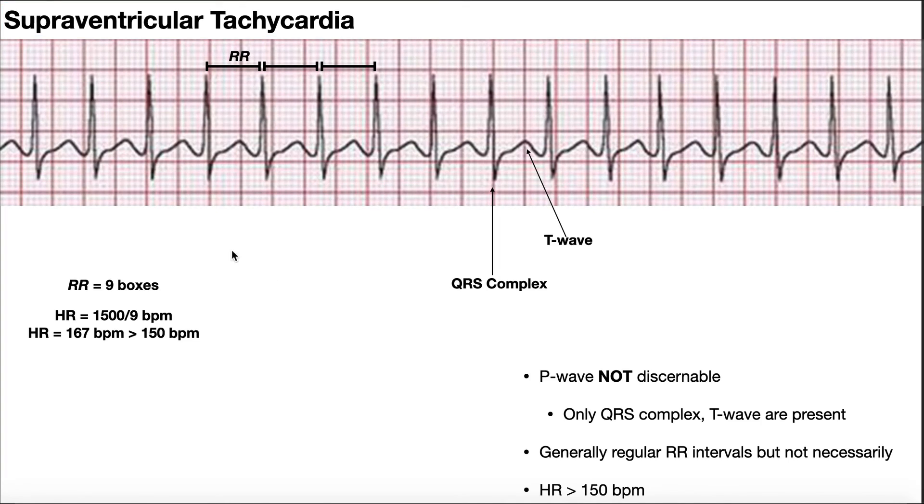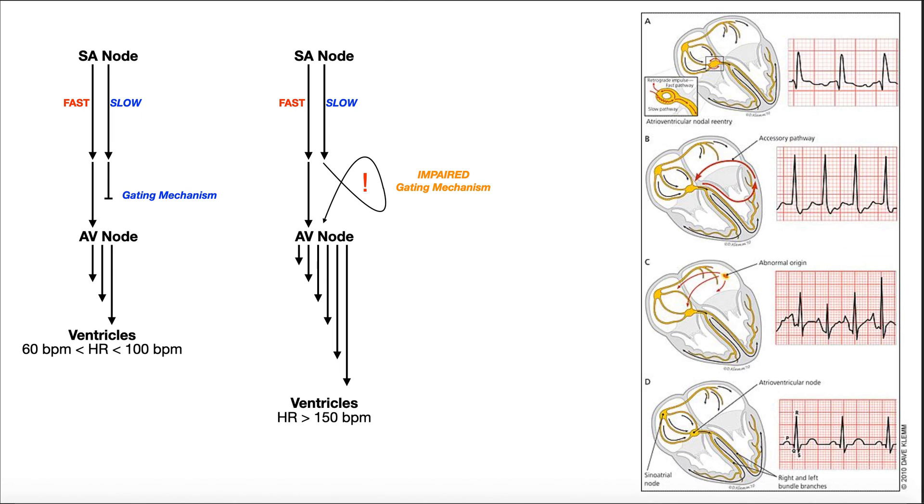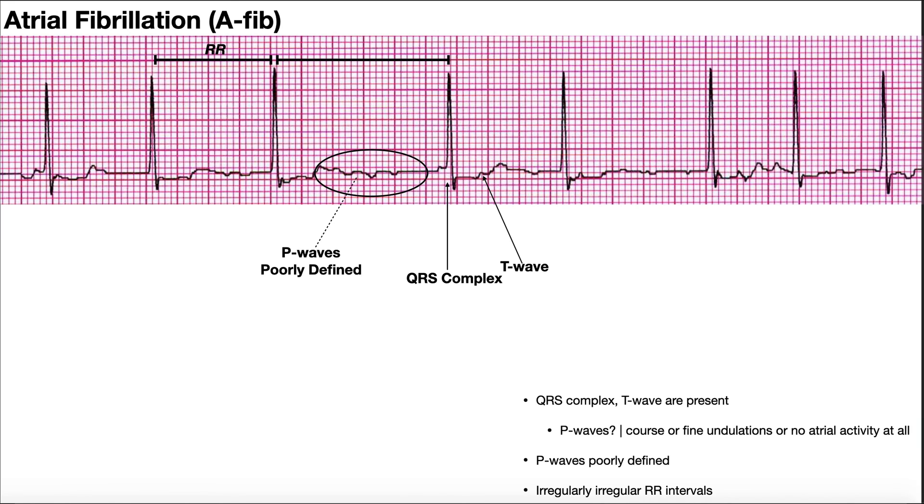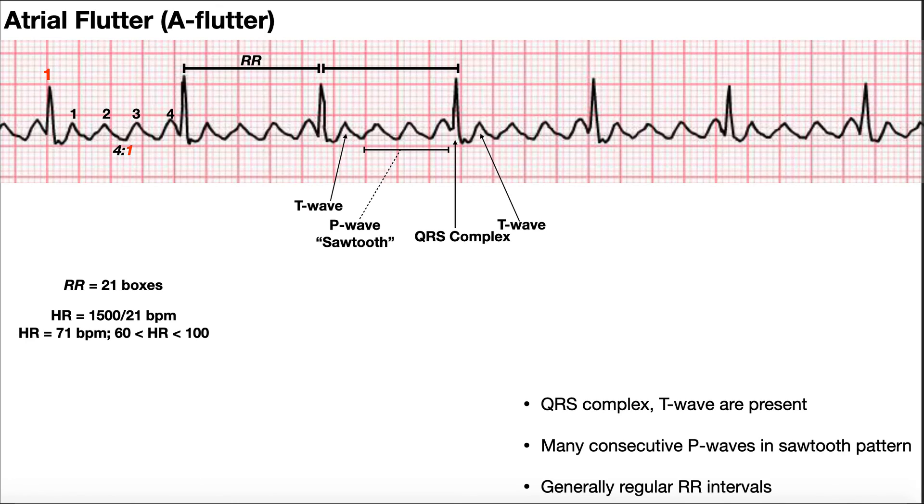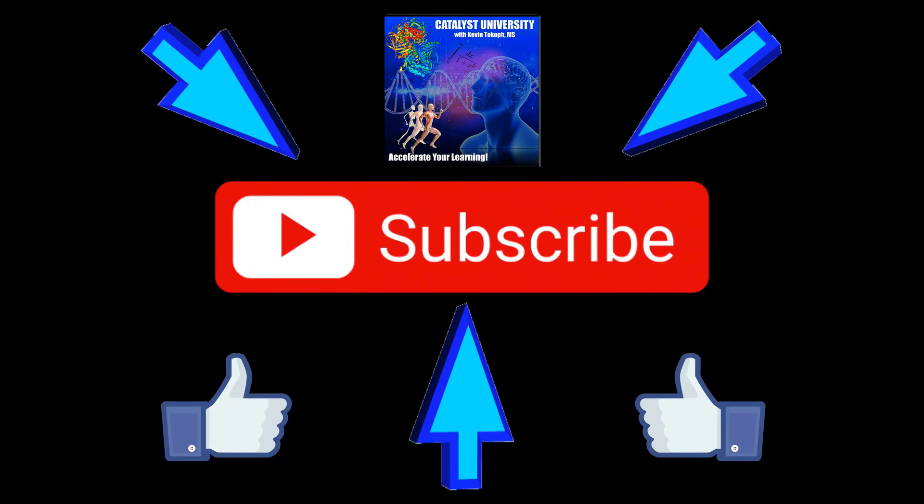Hopefully this video made sense, gave you a good understanding of the mechanism of a supraventricular tachycardia. In the next video, we're going to go into atrial flutter and atrial fibrillation, which are in some ways kind of distinct, but they are subtypes of supraventricular tachycardias. Please make sure to like this video and subscribe to my channel for future videos and notifications. Thank you.